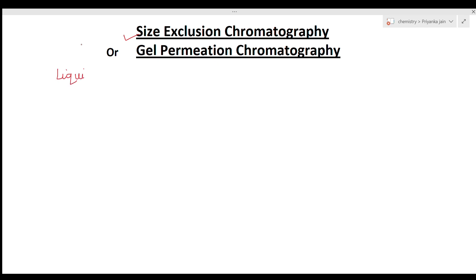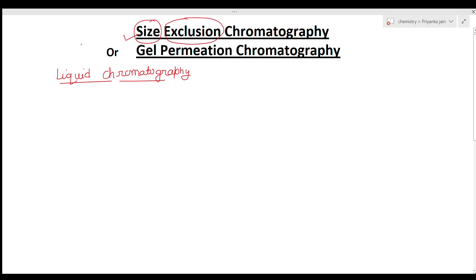Size exclusion chromatography is a form of liquid chromatographic technique, meaning our mobile phase is a liquid phase. The principle here is based on size exclusion. As I have told you about the classification of chromatographic techniques, there are several principles — adsorption chromatography, partition chromatography, and similarly size exclusion chromatography.